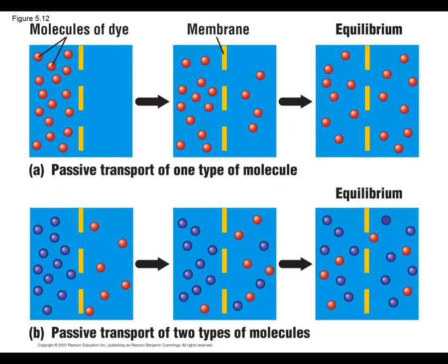What if you have two different kinds of molecules? The molecules on the left and the molecules on the right ignore each other. We have a high concentration of blue dots on the left and a high concentration of red dots on the right. The higher concentration of blue dots does not influence the diffusion of the red dots — each follows its own concentration gradient. Only a higher concentration of red dots on this side can stop the red dots from moving. Each will reach its own equilibrium.